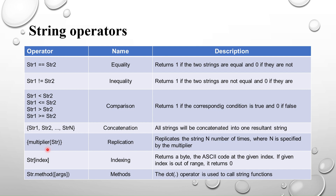The replication operator: inside curly braces you mention the multiplier number first, then the character or string you want to repeat. The multiplier n means you can repeat the string n number of times. For example, in curly braces five and s means it will return s five times: s s s s s. It replicates the string n number of times where n is specified by the multiplier.